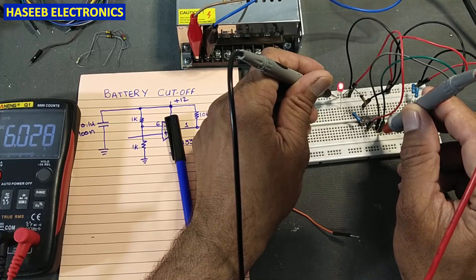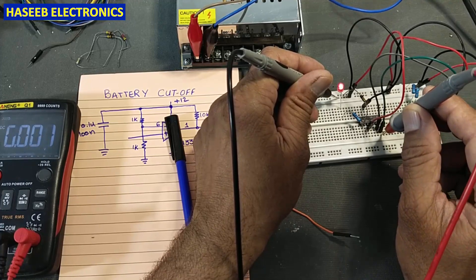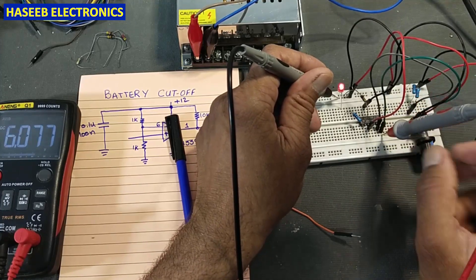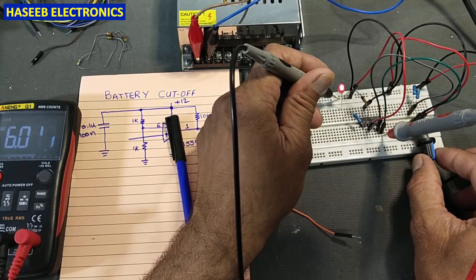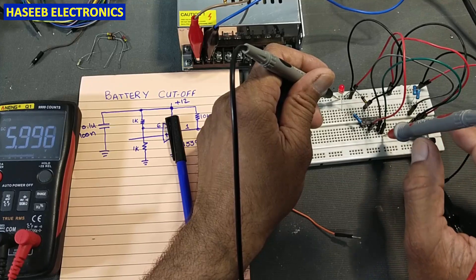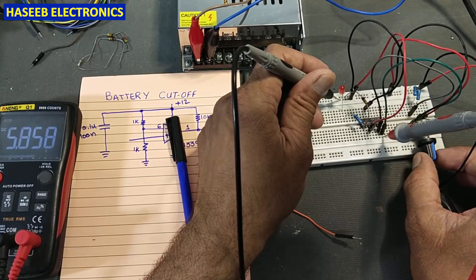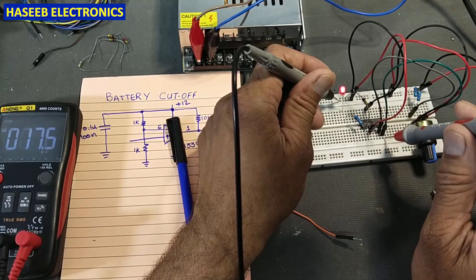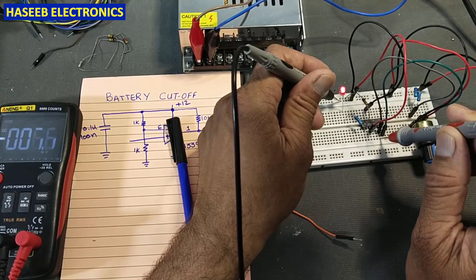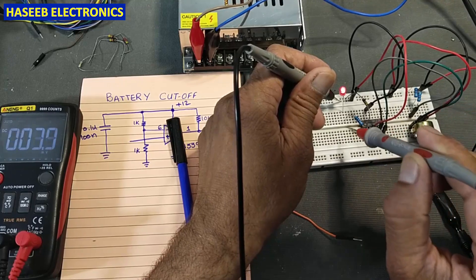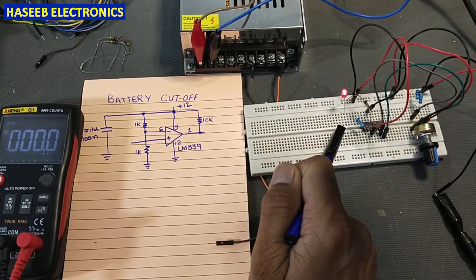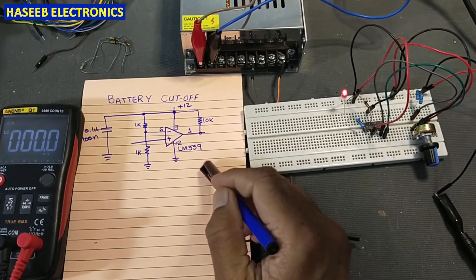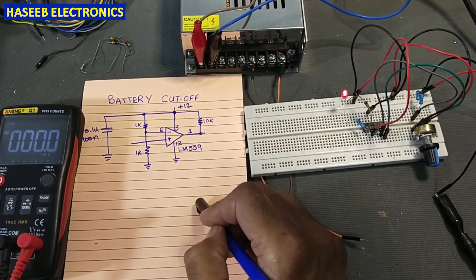We can see the comparator is comparing very closely. When the difference becomes less than about 6.2V, it will turn off. When the voltage at pin number 7 is more than pin number 6 — for example at 5.8V difference — the output goes high. This IC has an open collector output; the output transistor is connected to the low side.